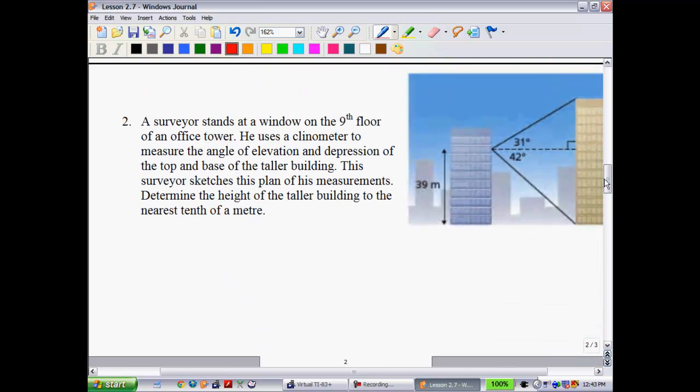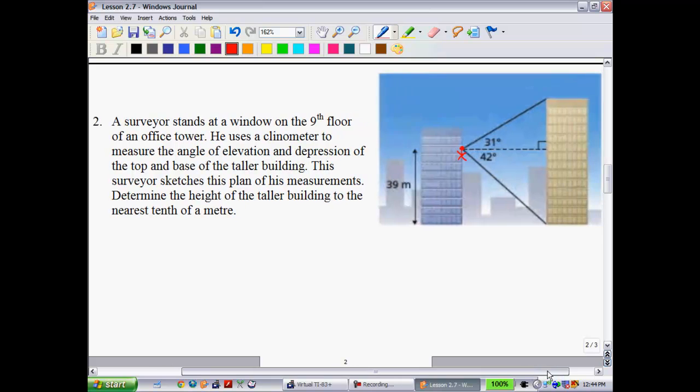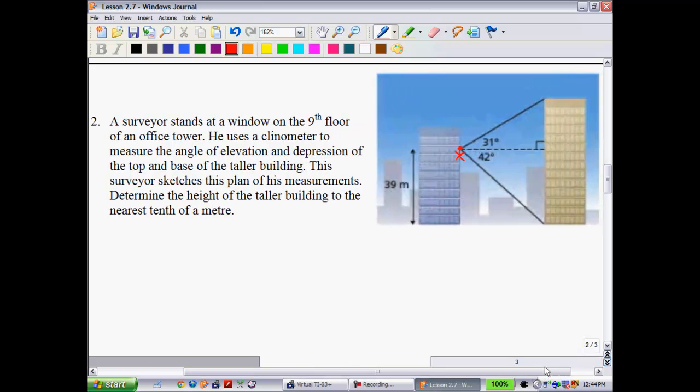Example 2. A surveyor stands at a window on the ninth floor. So he's right here. Maybe we'll draw him a little, there he is, living the dream. He uses a clinometer, you might recall us using a clinometer earlier this unit, to measure the angle of elevation and depression of the top and base of the taller building. The surveyor sketches this plan of his measurements. Determine the height of the taller building to the nearest tenth of a meter. So we want to figure out what the height is of this entire, I guess it's kind of a tan color over here. That entire height. Let's start out with some information that we know. We obviously know that the height of the tower from here to here is going to be 39 meters. They tell you that from looking at the fellow on the ninth floor.